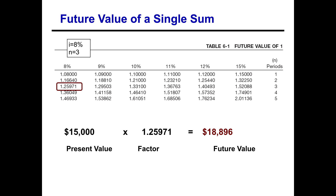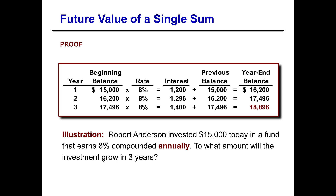We can also prove this longhand. Looking at this spreadsheet: in year one we started with $15,000. At 8% interest, at the end of year one we earned $1,200, giving a balance of $16,200. Since it's compounded, that's what we start with in year two: $16,200 times 8% earns $1,296, leaving a balance of $17,496. In year three, $17,496 times 8% earns $1,400, leaving us with $18,896 — matching our shorthand time value of money table result.